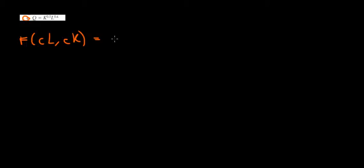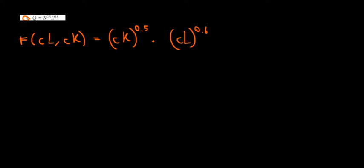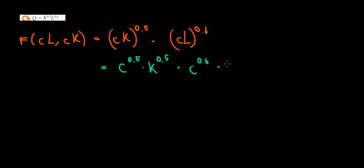This is going to give us C times K to the power of 0.5. We add the proportion of C to the capital, multiplied with C times L to the power of 0.6. So we have C to the power 0.5 times K to the power 0.5, multiplied with C to the power 0.6 — raising every base to that exponent — and L to the power 0.6 as well.